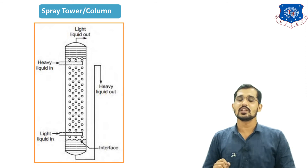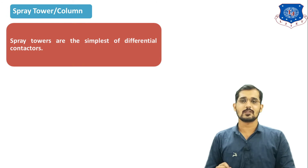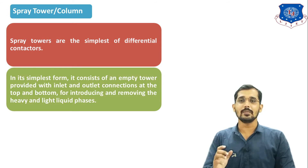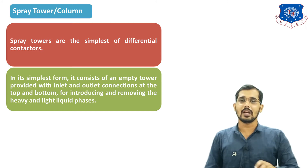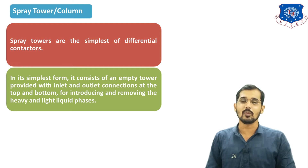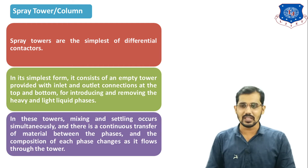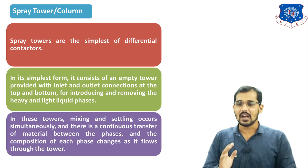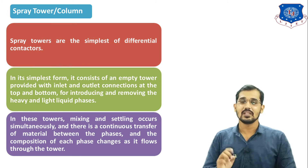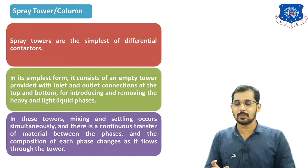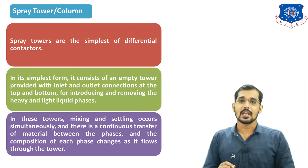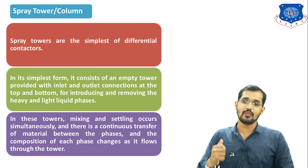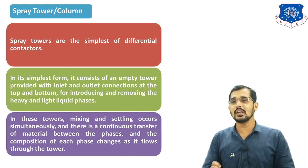The important points related to the Spray Column are: first, spray towers are the simplest of differential contactors. Second, in its simplest form this spray column consists of an empty tower provided with two inlet and two outlet connections. Third, in this tower mixing and settling occur simultaneously, and there is a continuous transfer of material between the Extract phase and Raffinate phase. The constituent we are removing is present in larger composition in the Extract phase, which is removed from the top section, while the Raffinate phase is removed from the bottom section.